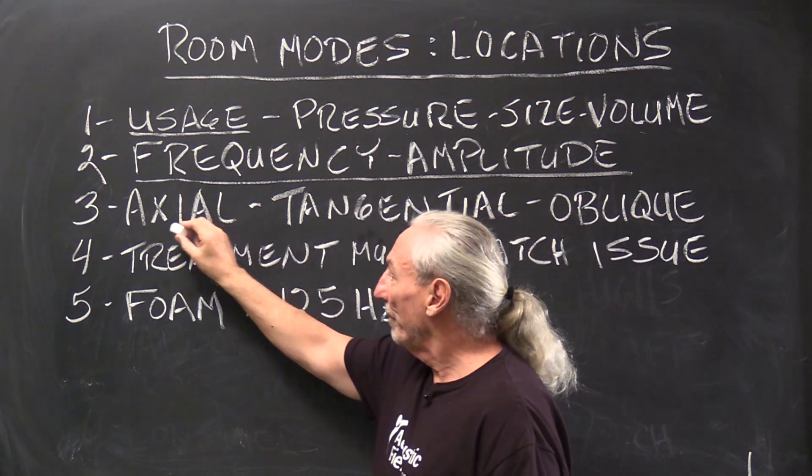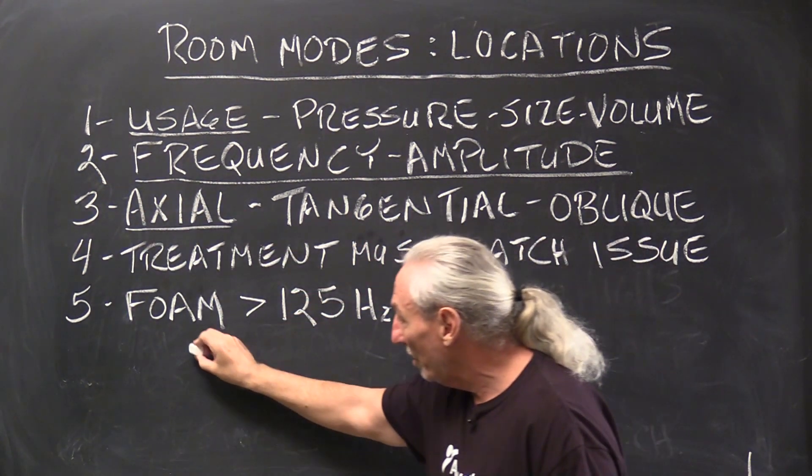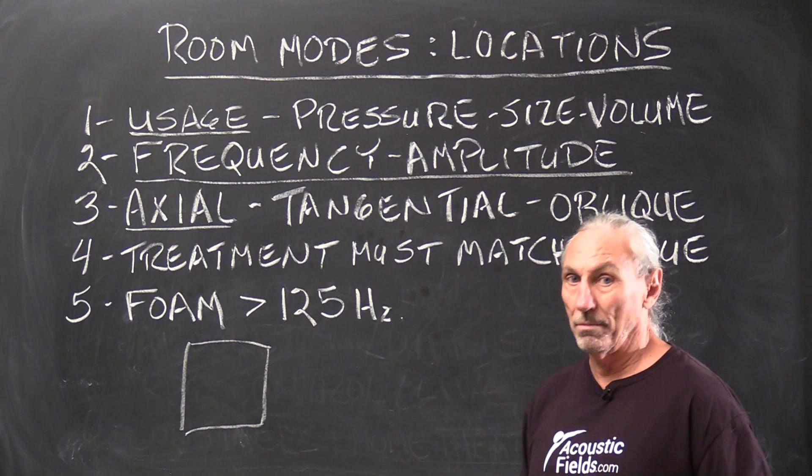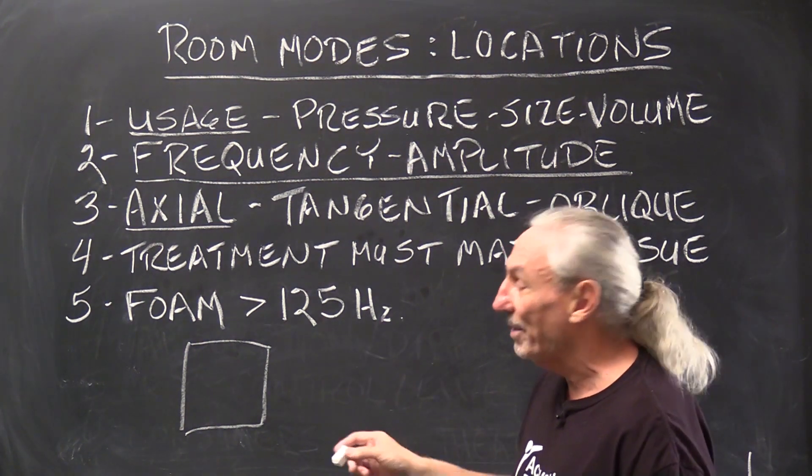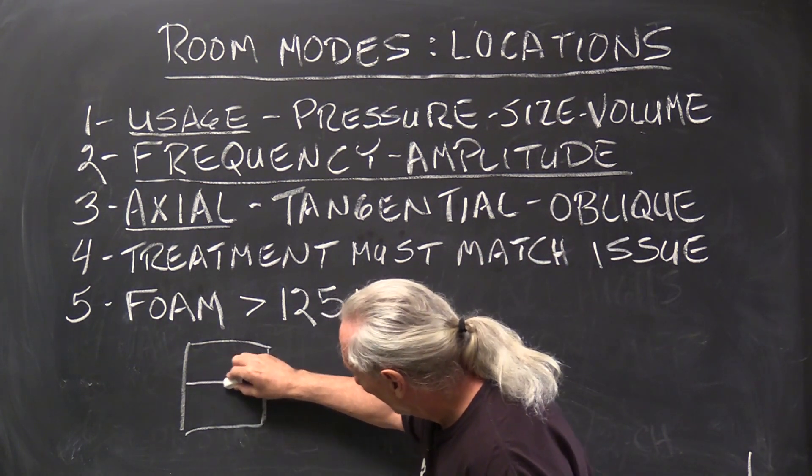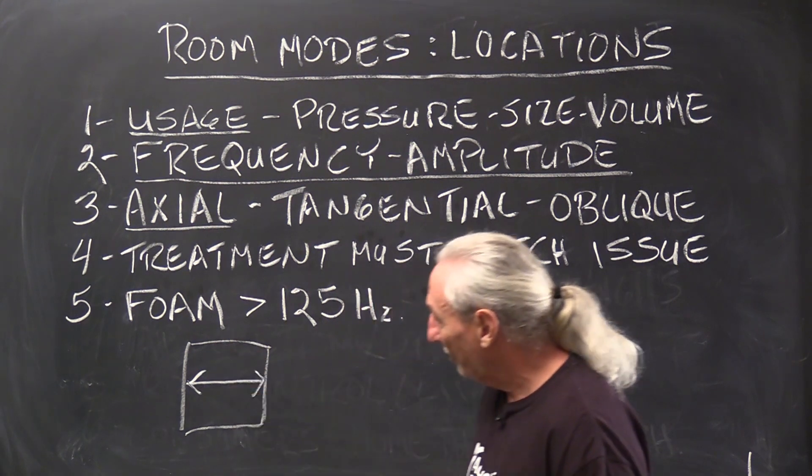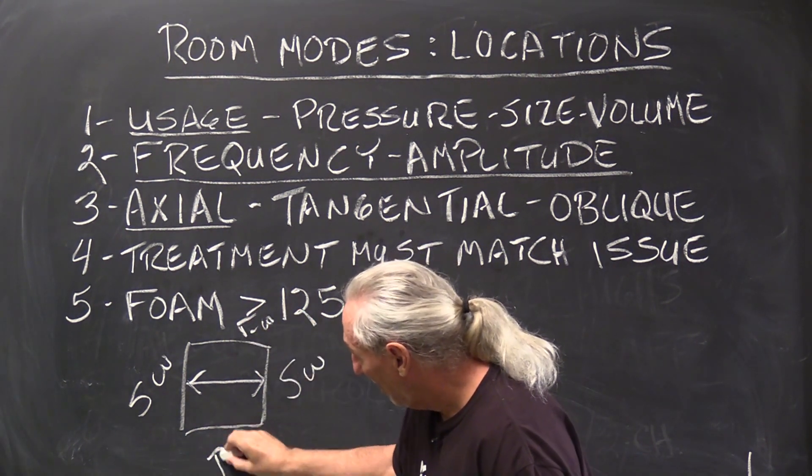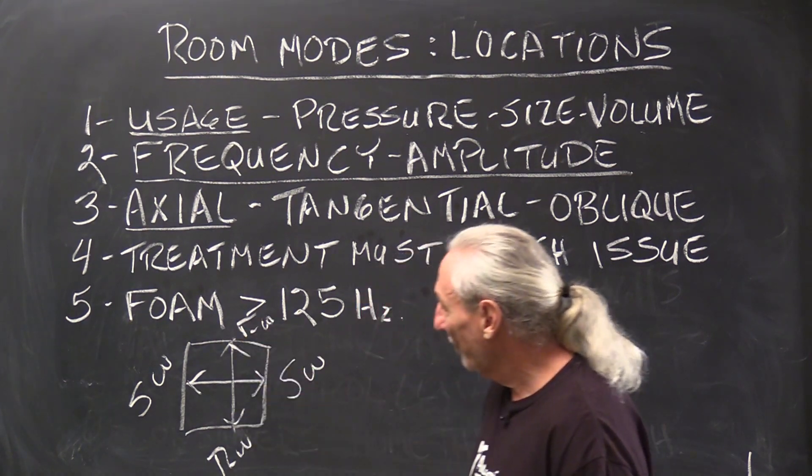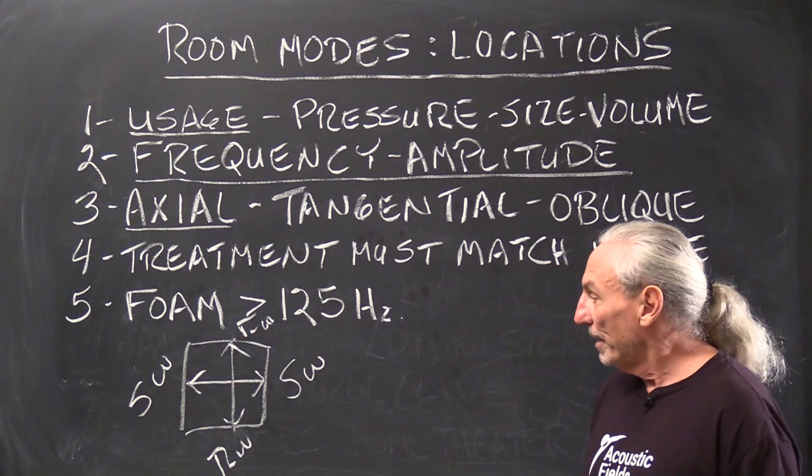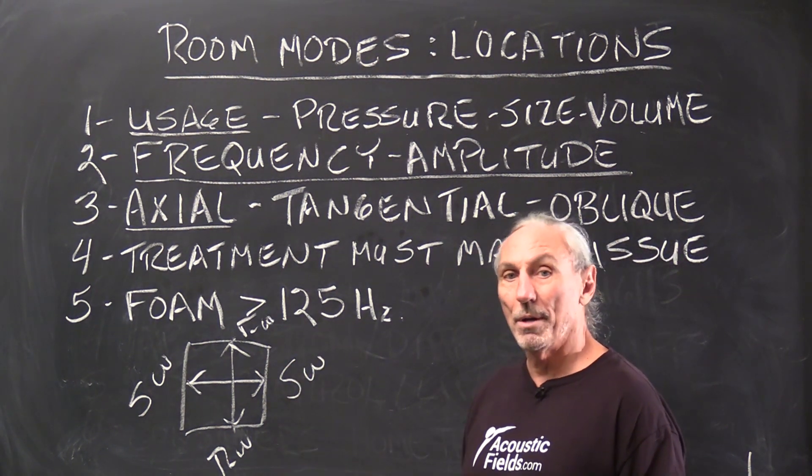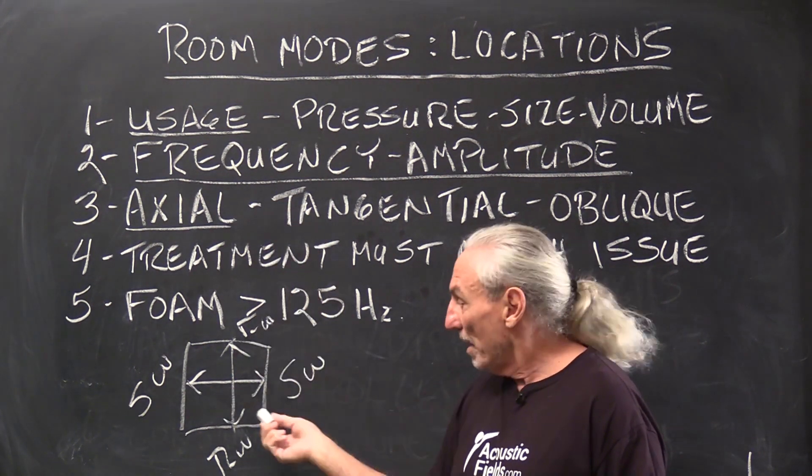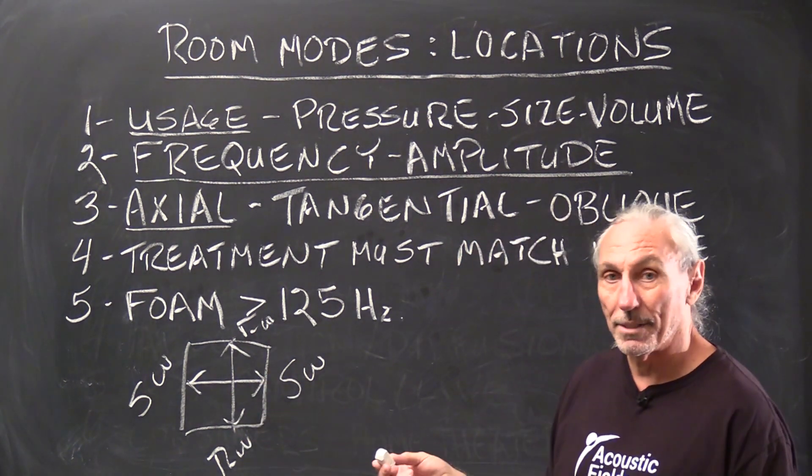So we know that axial modes from past videos are the strongest. Now those are the modes between two parallel surfaces. So if we have our room here, I know it's square, don't get upset. We're using this for purposes of illustration. I know square rooms are not good, but axial modes are the modes between two parallel surfaces. So it could be side wall, side wall. It could be front wall, rear wall. Two parallel surfaces. They're the strongest. So if our room is small and we want to play drums, we know that the pressure, especially the low frequency pressure between these two parallel surfaces is going to be the greatest.